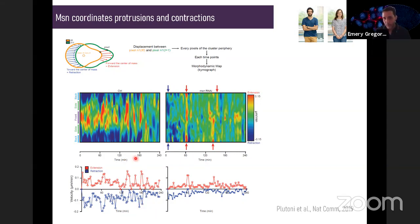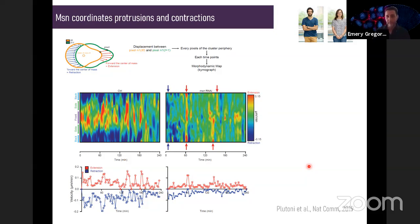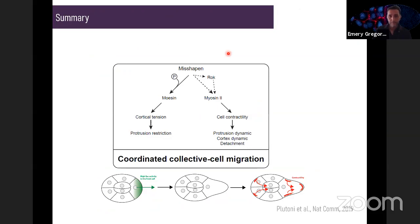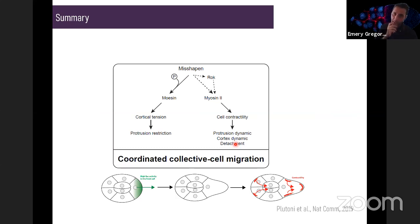This indicates to us that the coordination between protrusion extension and contractility is now lost. To summarize: misshapen acts on moesin to restrict protrusion, and acts on myosin-2 to regulate contractility, and together these coordinate collective cell migration in the border cell cluster.